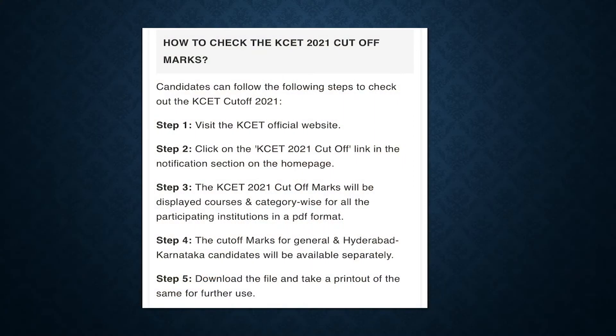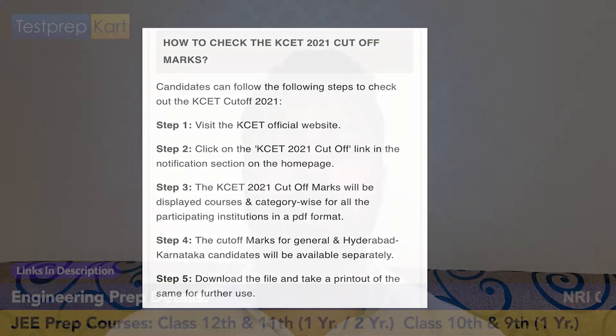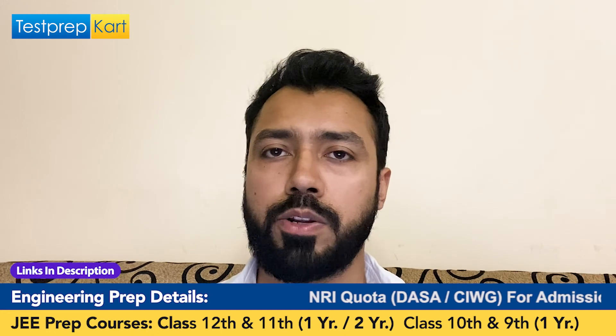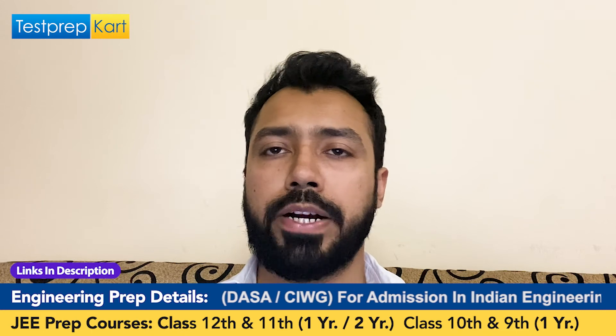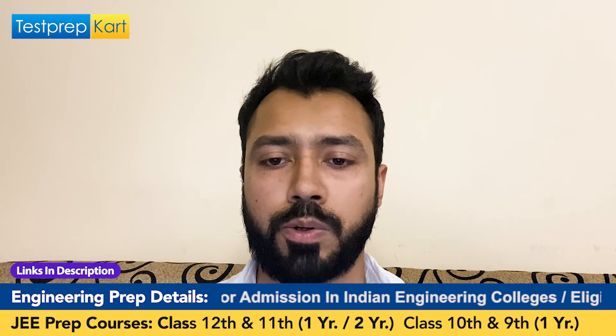To check the KCET 2021 cutoff, candidates can follow these steps: first, go to the official website of the Karnataka Examination Authority (KEA), which is regularly updated. Then click on the cutoff link in the notification section on the home page. The cutoff marks will be displayed course-wise and category-wise for all participating institutions in a PDF format. Cutoffs for general and Hyderabad-Karnataka candidates will be available separately. You can download and print the file for future reference.